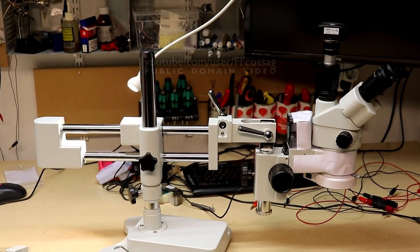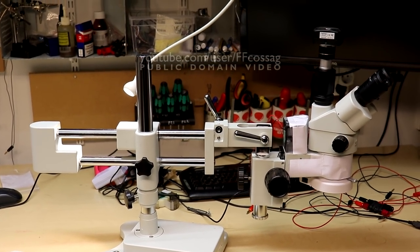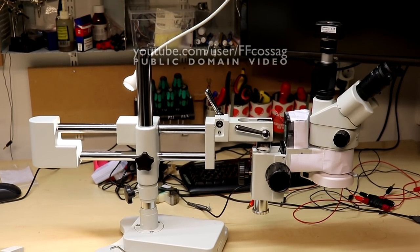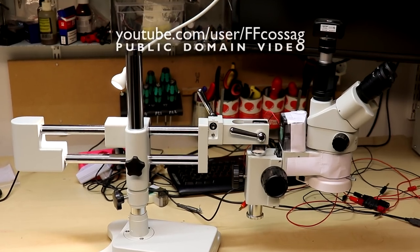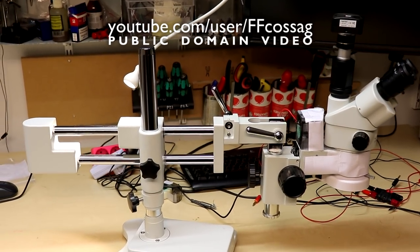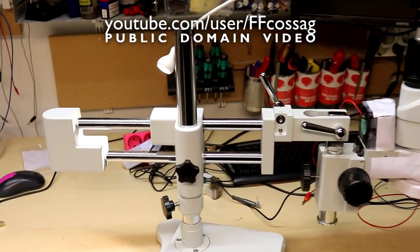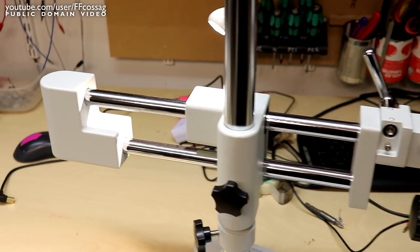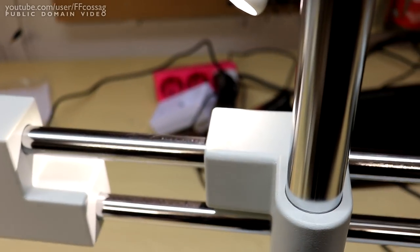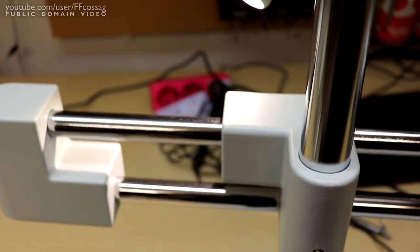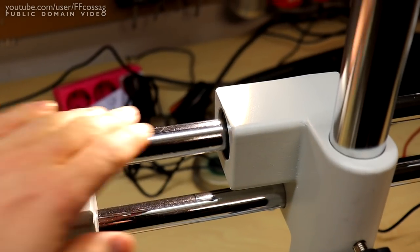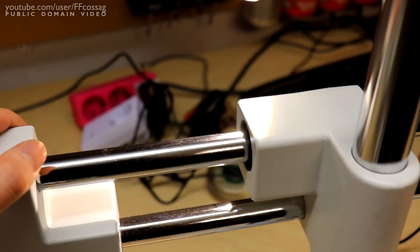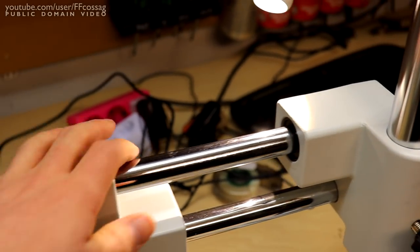A while back I got this Amscope microscope with a double boom arm, and shortly after arriving it ran into issues with the boom arm. These arms have had an issue for many years where the material they've used for the rod is just not good enough quality, it's not hard enough metal to actually support the microscope.